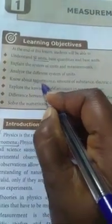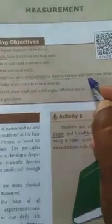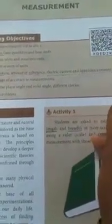This year, we are going to read this under SI units, base quantities and base units. Then explain the system of units and measurements. Analyze the different system of units. Mainly, we can see about temperature, amount of substance, electric current and luminous intensity in fundamental quantities.